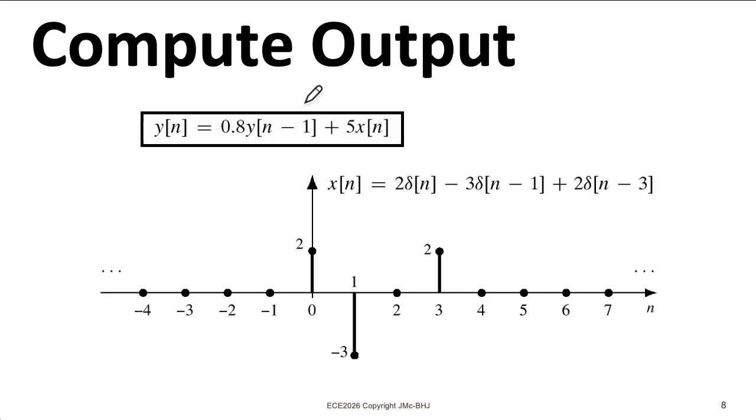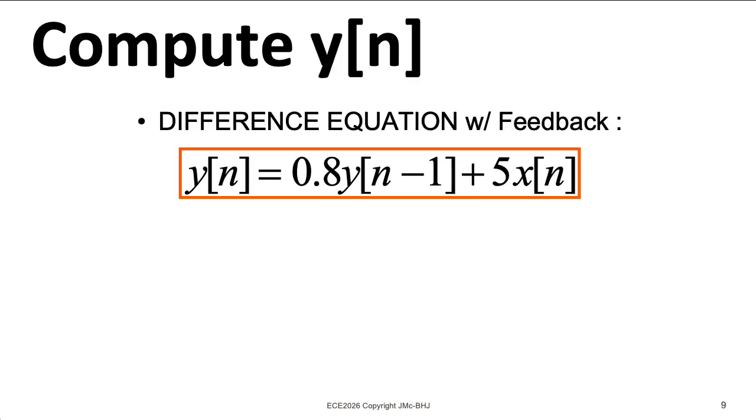Let's look at a first order IIR filter with a feedback coefficient of 0.8. And here we're only using the current input, and we're multiplying it by 5. Let's see what the output looks like for the input sequence 2, minus 3, 0, 2.